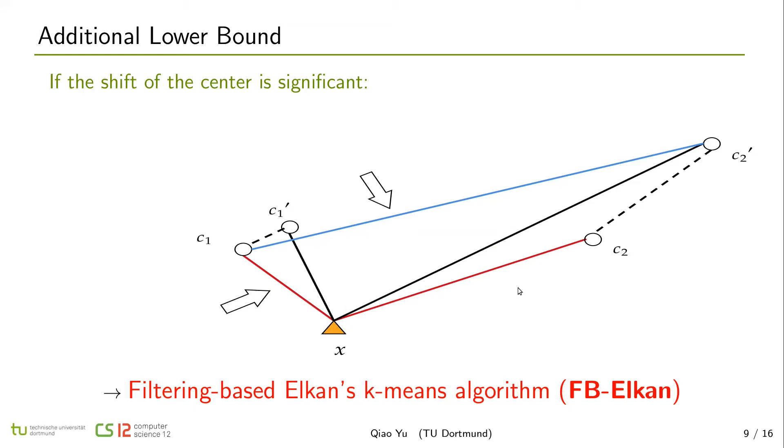Combining above introduced filtering methods, we create our filtering based Elkan k-means, FB-Elkan. The additional overhead of this FB-Elkan is to connect c1 and c2', and it requires overall big O(k^2) complexity, but it can reduce more distance calculations than Elkan, so it achieves better speedups in high dimensional datasets.